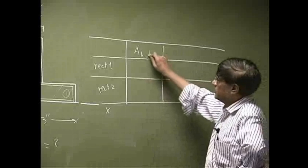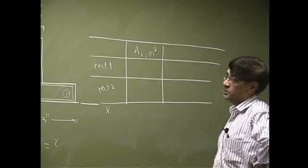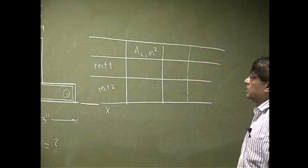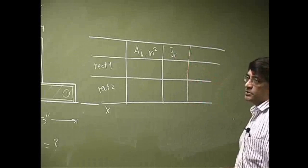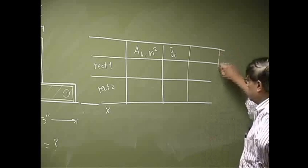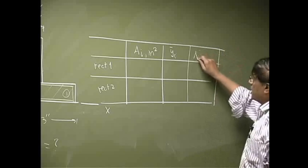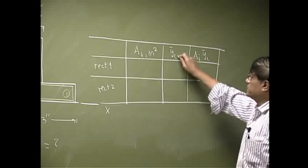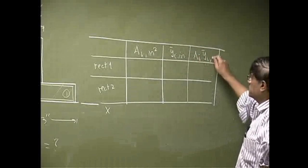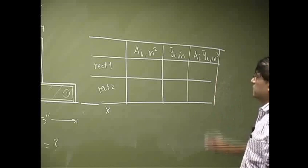In this case, that's going to be in inch squared. The second column could be y_i bar, the centroid of those areas. And then the last column here is going to be the product of A_i and y_i. This is going to be in inch. This is going to be in inch cubed.